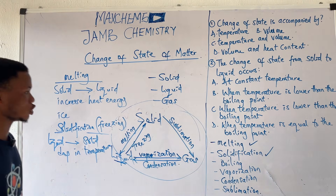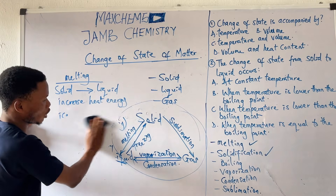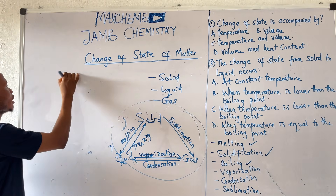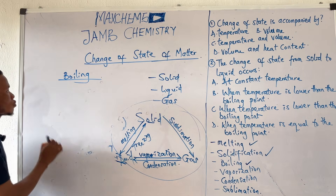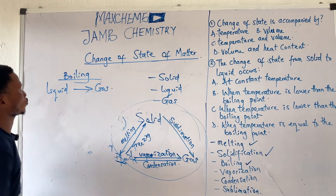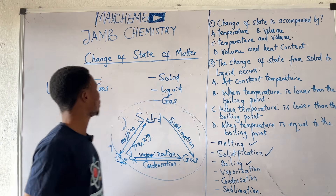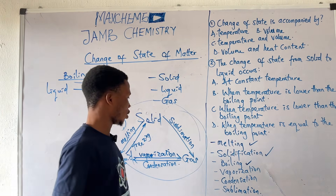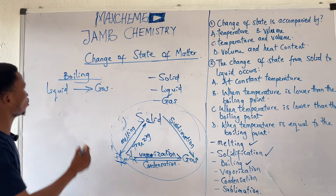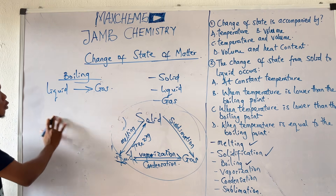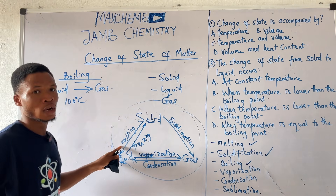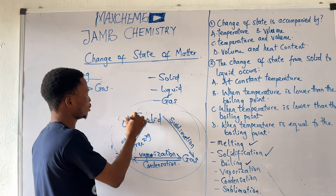Moving on to boiling. Boiling is the application of heat to change liquid to gas. All substances have their boiling points. For example, water changes from liquid to gas at 100 degrees Celsius. Substances also have their melting points — the melting point of water is zero degrees Celsius.